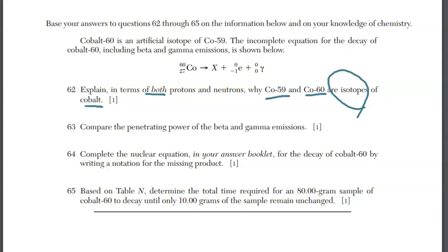For question 63, compare the penetrating power of beta and gamma emissions. Gamma emissions have greater penetrating power than beta emissions. Gamma does more damage than beta, and beta more than alpha. Penetrating power order: gamma is the most, then beta, then alpha the least. It's a fact you need to know. Definitions and facts come into play along with some skills throughout the Regents exam.